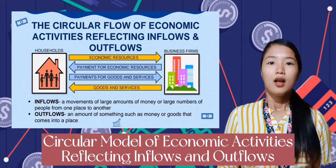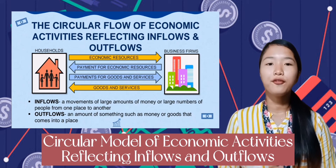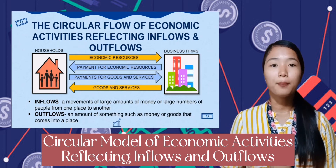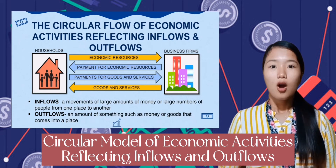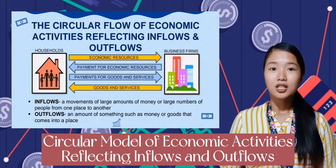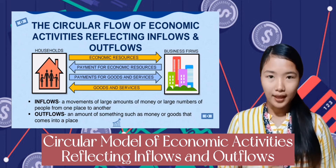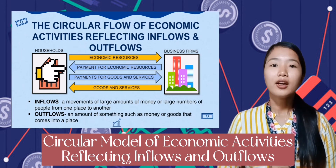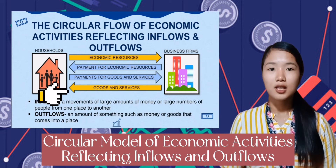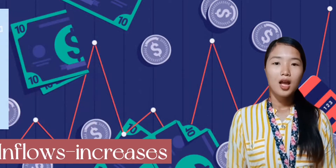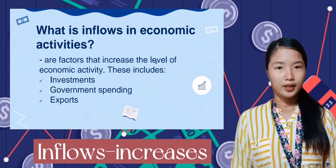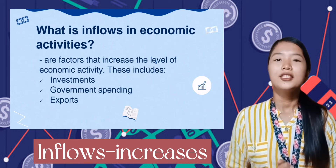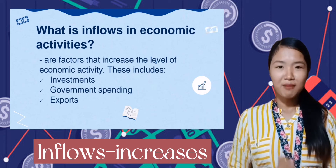If you look at the picture, you can see that there is a process of inflow and outflow. Outflow means the movement of large amounts of money or large numbers of people from one place to another. If you look at the arrows, you can see the light color represents the movement of money, and the dark color represents the movement of goods, services, and economic resources. So what are inflows in economic activities? These are the factors that increase the level of economic activity, including investments, government spending, and exports.